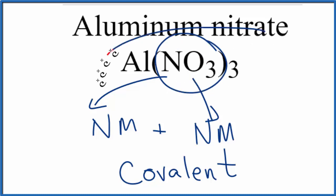But overall, the bond between the positive aluminum and the negative nitrate ions, that's ionic. So for aluminum nitrate, Al(NO3)3, we have overall an ionic bond here with covalent bonds within the nitrate ion.